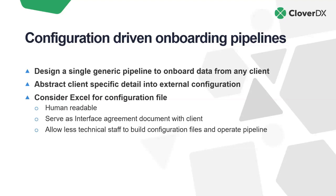The configuration itself can be stored anywhere — flat files, database tables. We often like to use Excel for these configurations for several reasons: they're human readable, and they can serve a dual purpose. In addition to instructing the pipeline how to behave, we can share the Excel sheet with the end client and say, 'This is how we're about to treat your data.' That document can serve as a launching point for discussions with the client on how the ingest may not have worked as expected. Excel is universally known, making it easier for less technical staff to build, modify, and use these config files to operate the pipeline.